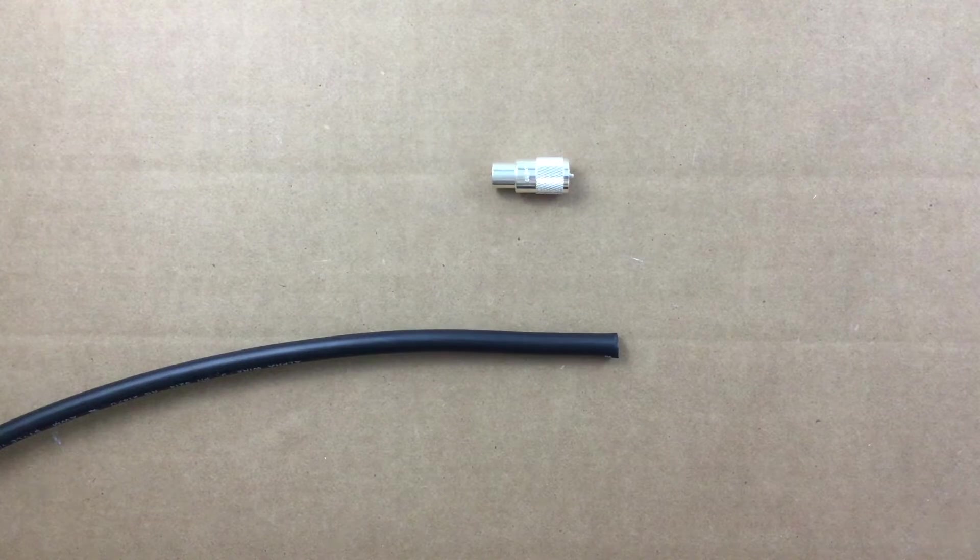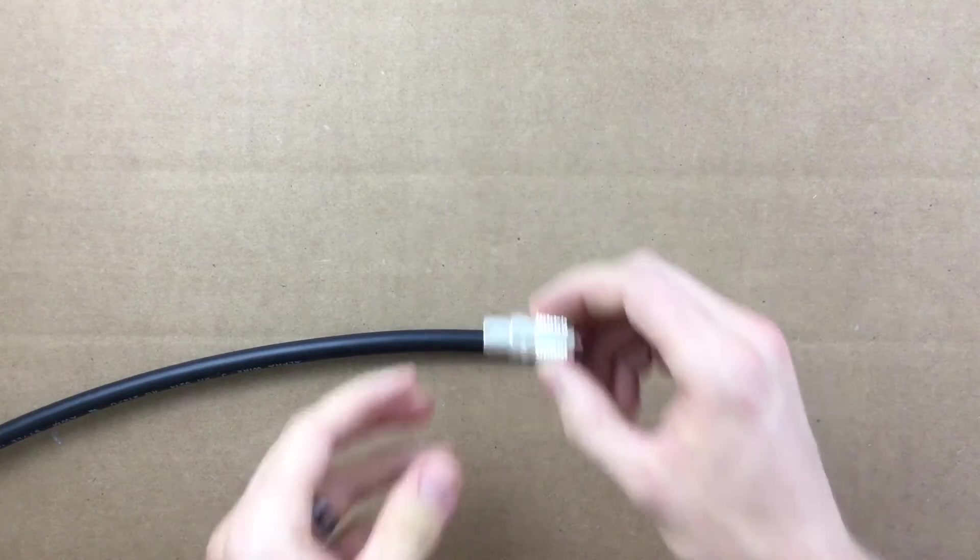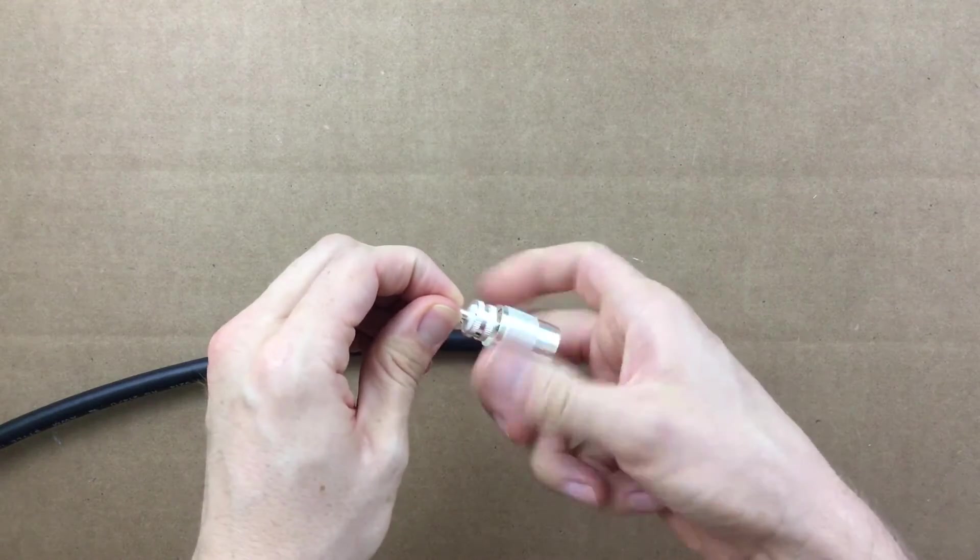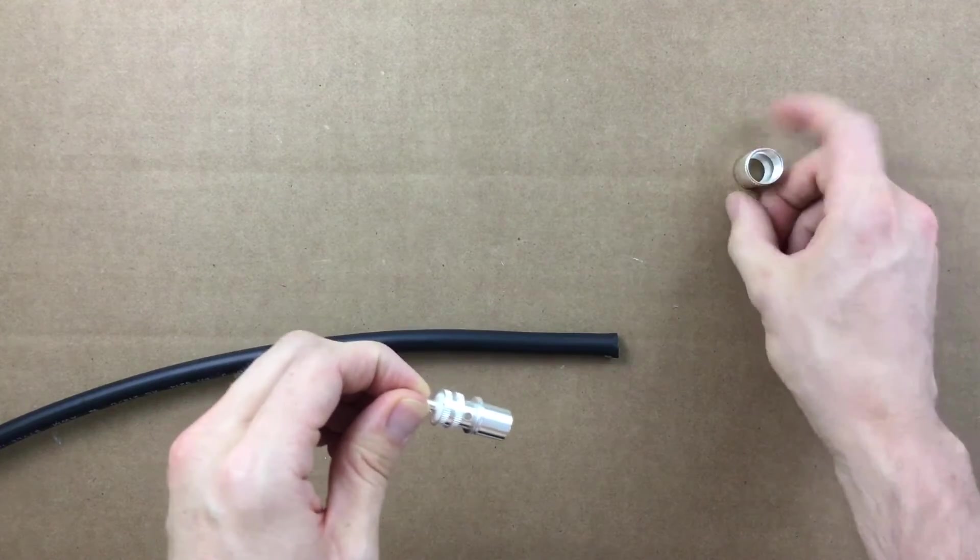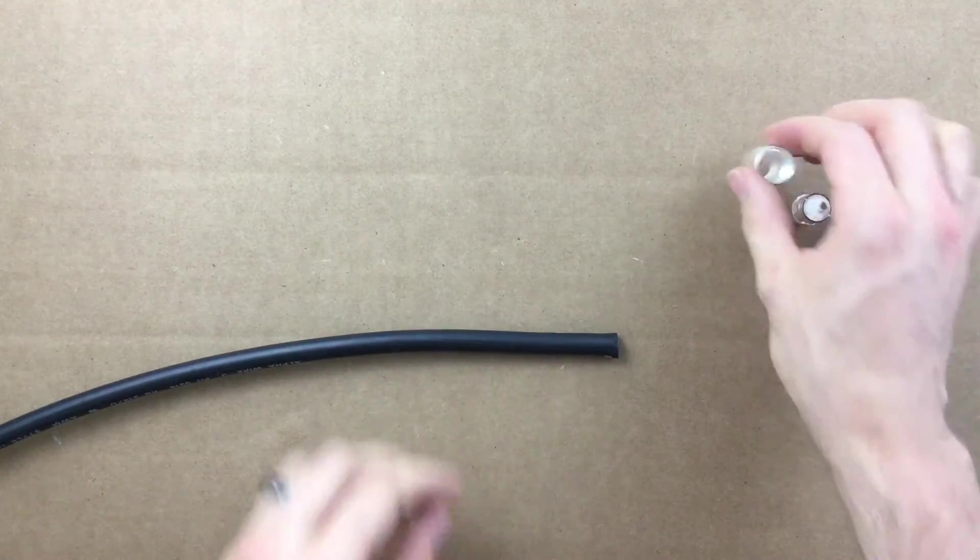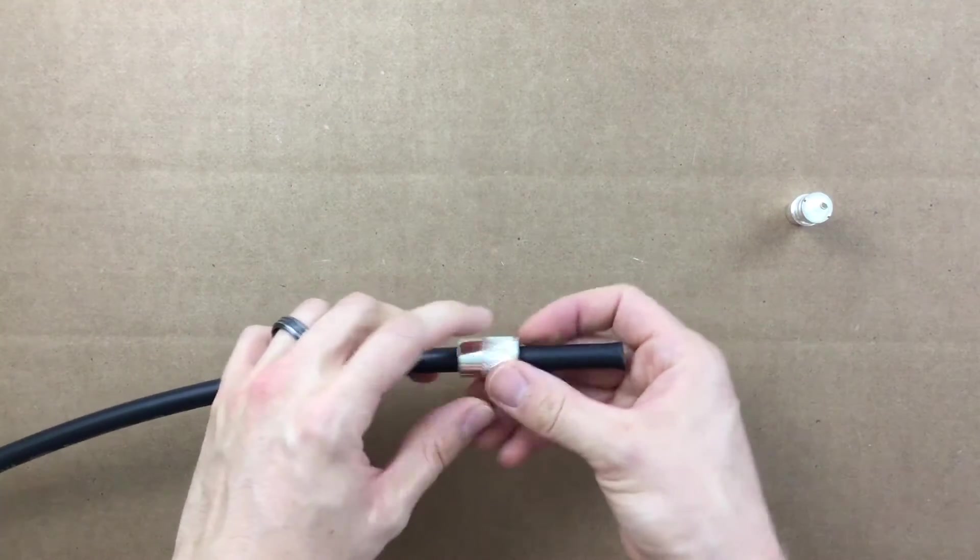We start out by separating the outer shell of the PL259 by simply unscrewing it. Place the outer shell on the coax.